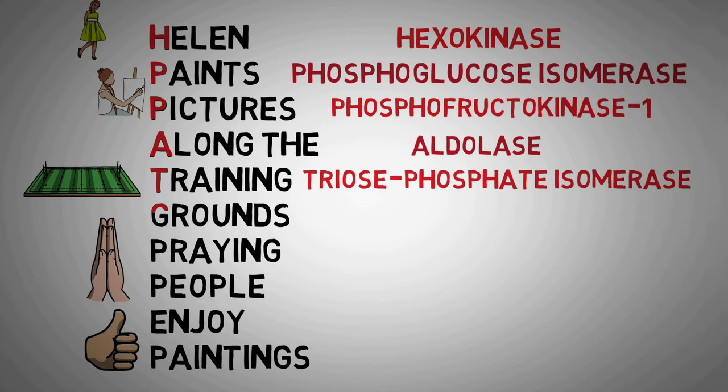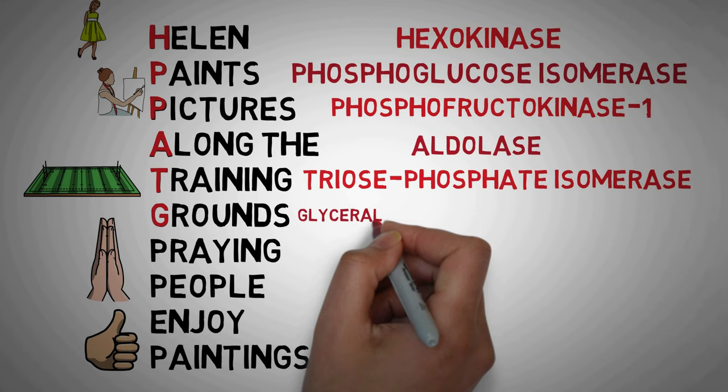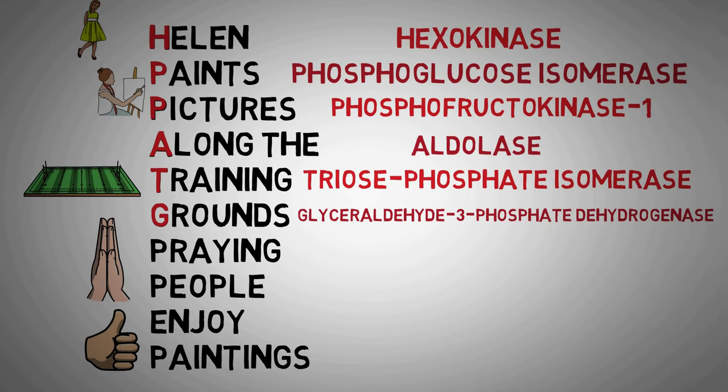The next word we have in our mnemonic is ground, which starts with G. The G here stands for our next enzyme in glycolysis, which is glyceraldehyde 3-phosphate dehydrogenase. This enzyme converts glyceraldehyde 3-phosphate to 1,3-bisphosphoglycerate.